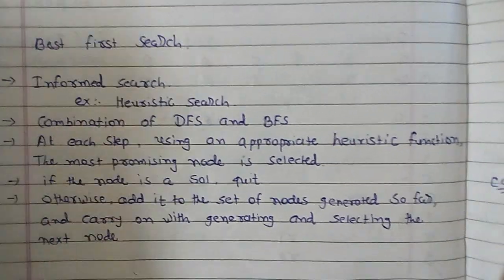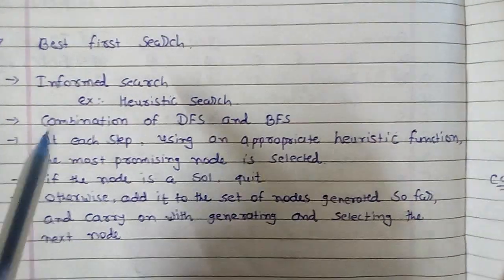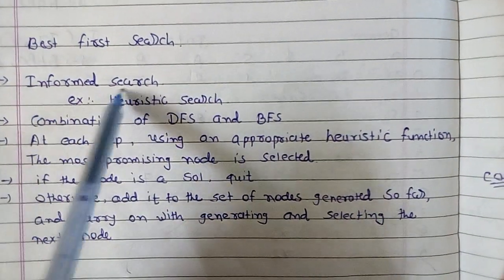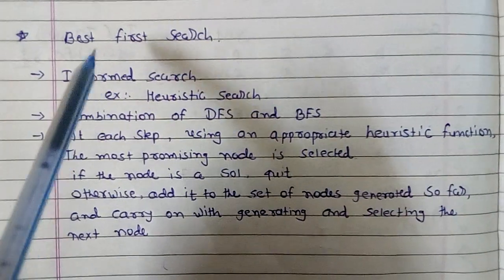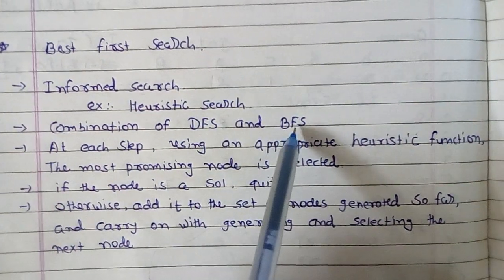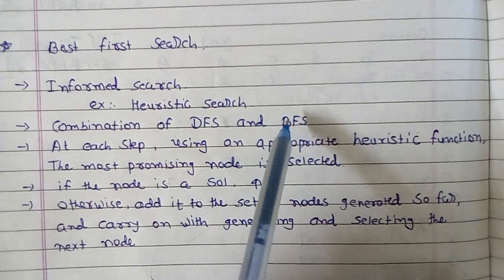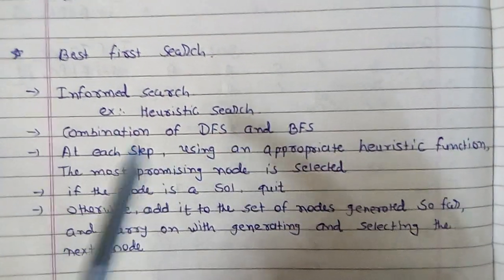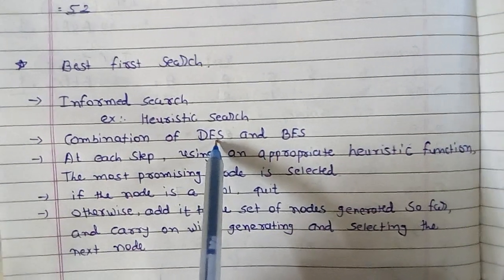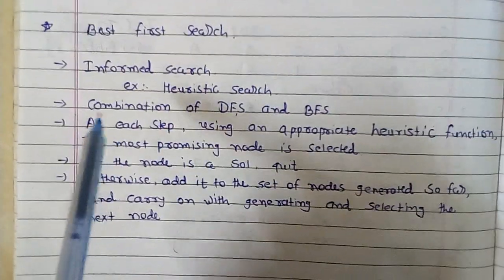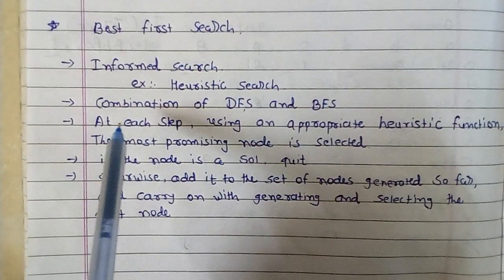For example, heuristic search is an informed search. Best first search is a combination of DFS and BFS. BFS and DFS have problems with time complexity as well as space complexity.